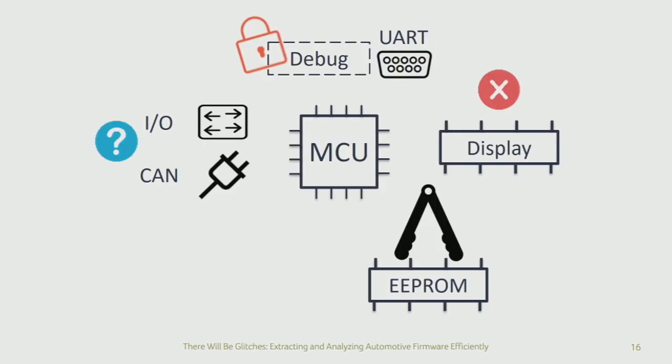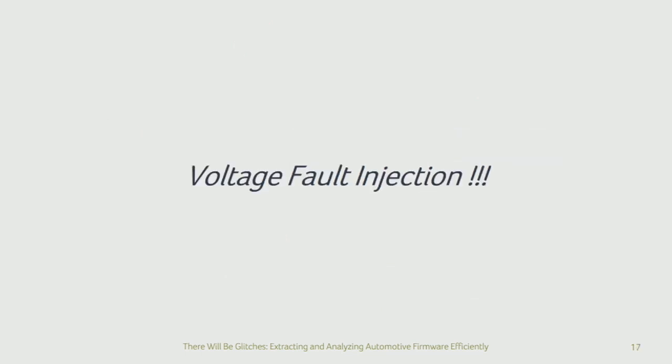Looking at the internals of our dashboard again, there's one interface we did not talk about that we can control — and that's the voltage provided to the chip. We cut off the original voltage to provide our own, giving us full control over what kind of voltage signal is provided to the target. This allows us to do something very nifty, typically referred to as voltage fault injection or voltage glitching.